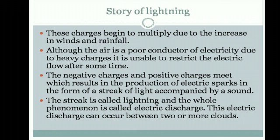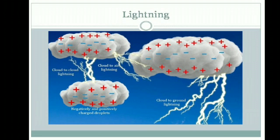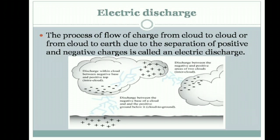The electric discharge can occur between two or more clouds — cloud-to-cloud lightning, cloud-to-air lightning, or cloud-to-ground lightning. Electric discharge is the flow of charge from cloud to cloud or from cloud to earth due to the separation of positive and negative charges.